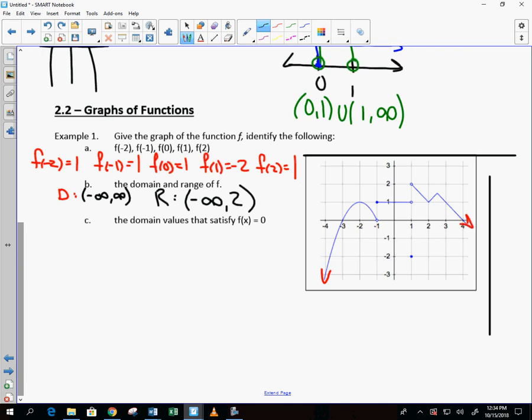The final question says, what domain values satisfy f of x equals 0? So that means, what would you plug in for x to get an output of 0? And so I'm going to put this line right at 0. What values would you plug in to get an output of 0? Negative 3 and 4. Not negative 1 because f of negative 1 is 1. Very good. You guys are smart. Way to go.